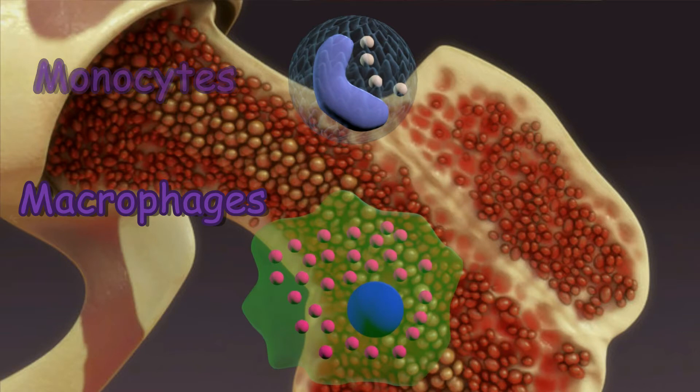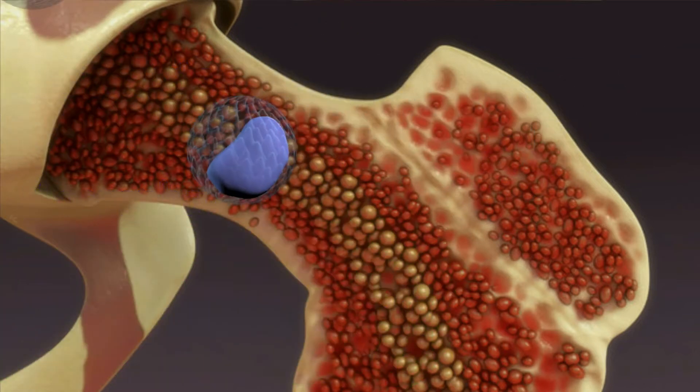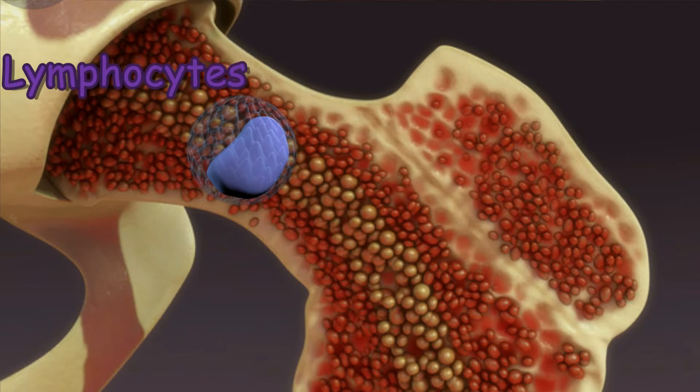Lymphocytes create antibodies to fight against bacteria, viruses, and other potentially harmful invaders. Types of lymphocytes include T cells, B cells, and natural killer cells.